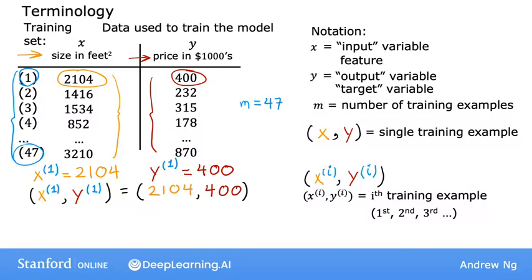Just a note, this superscript i in parentheses is not exponentiation. So when I write this, this is not x squared. This is not x to the power of 2. It just refers to the second training example. This i is just an index in the training set and refers to row i in the table.